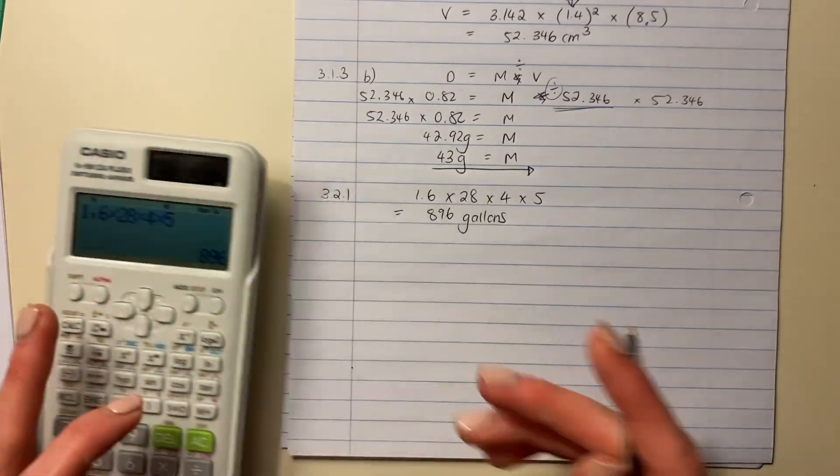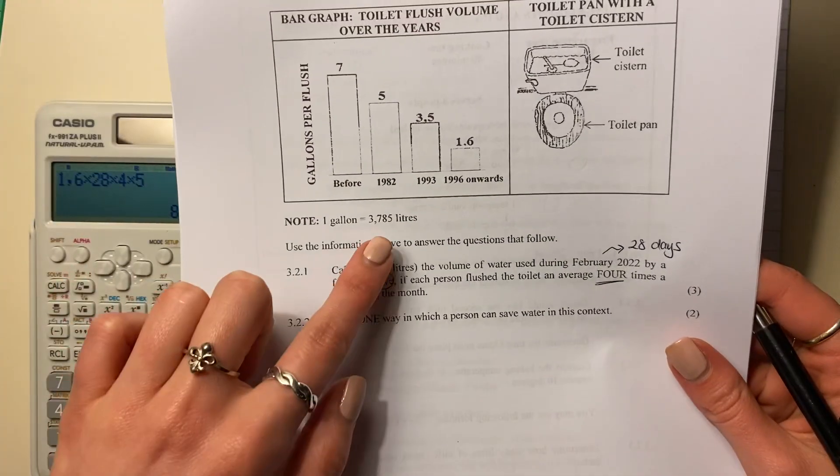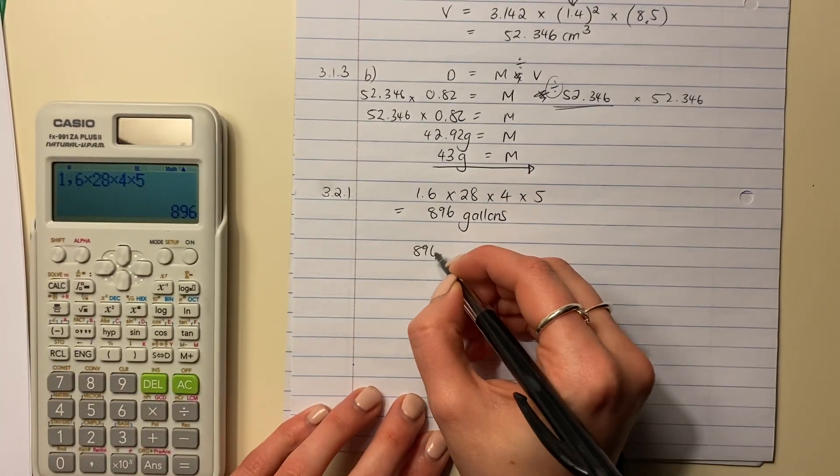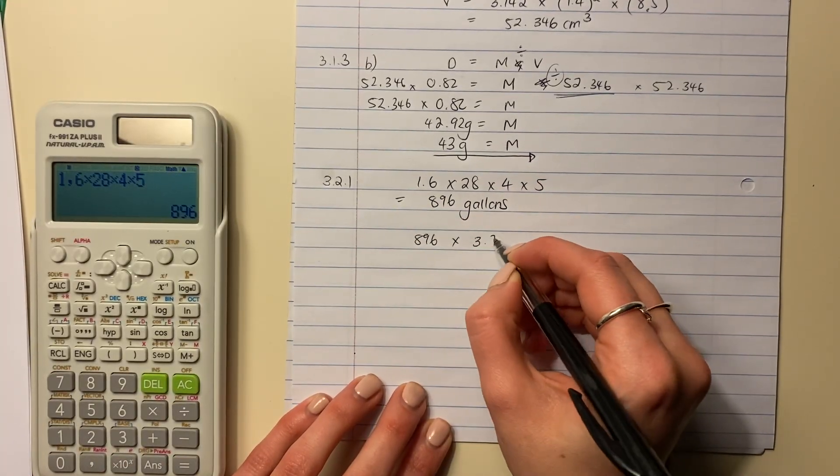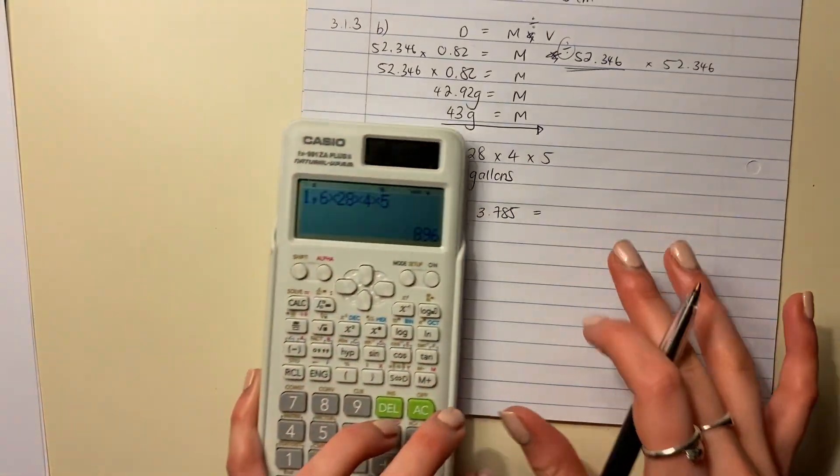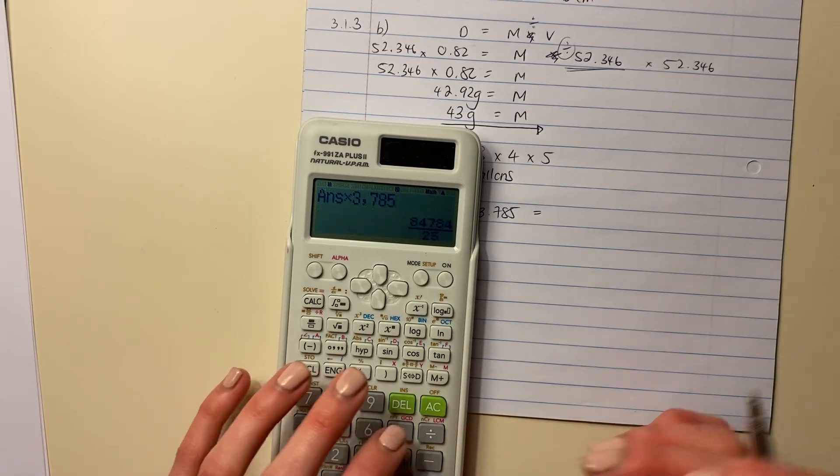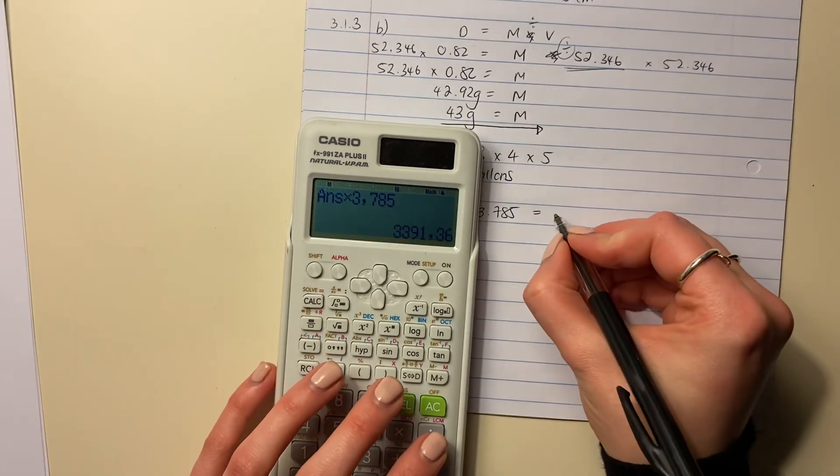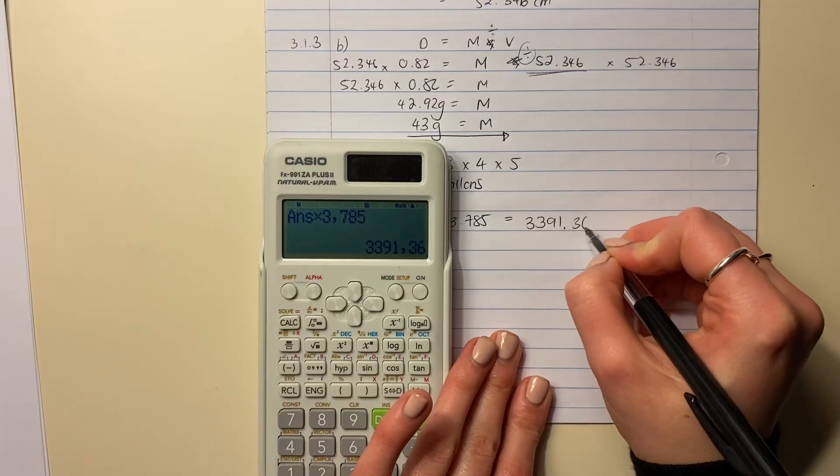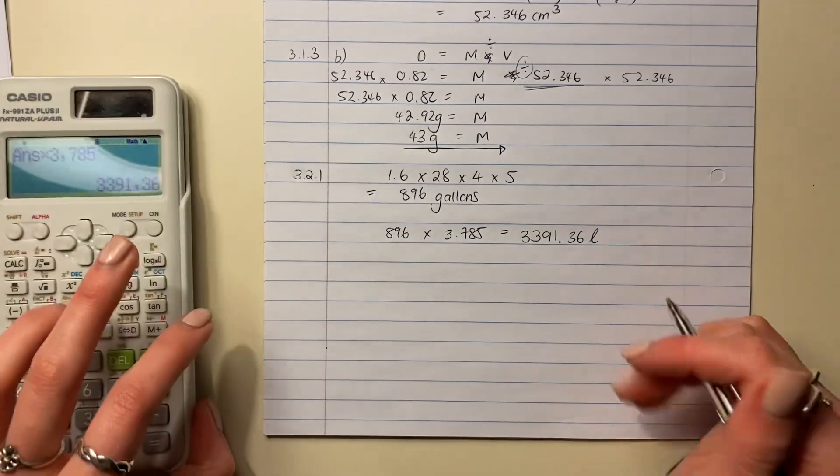Now, it didn't ask for gallons. It asked for it in liters. Now, how many liters are there in a gallon? There's 3.785. So we need to say, okay, 896 times 3.785. That will give us our amount of liters. So put that in times 3.785. Be careful you type that in correctly, right? And that is 3,391.36. And be careful to put in your units, liters. Okay, and that's your answer there.